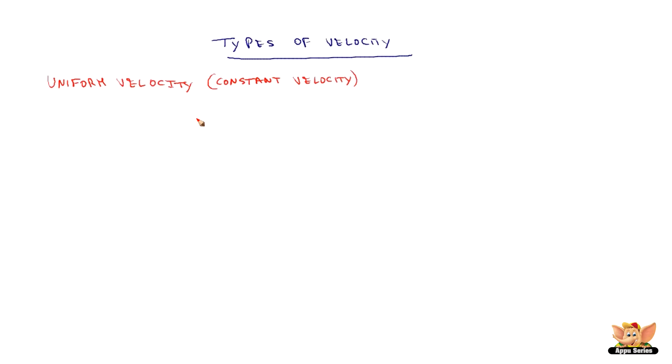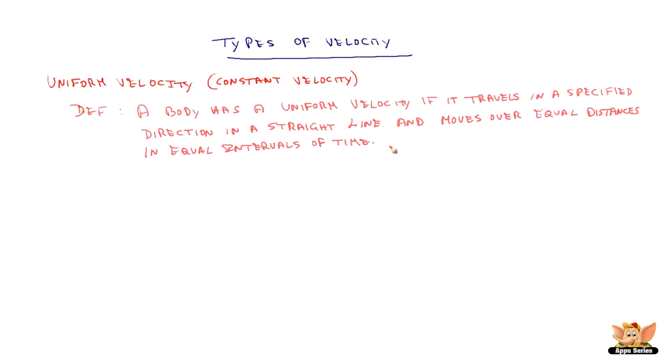The definition of uniform velocity is: a body has a uniform velocity if it travels in a specified direction in a straight line, the magnitude is changing equally at the uniform rate, and moves over equal distances in equal intervals of time.